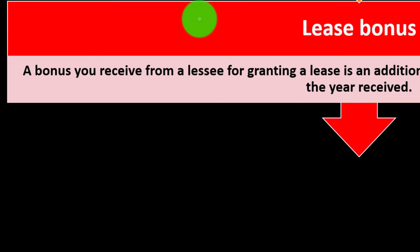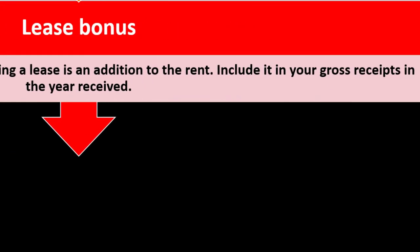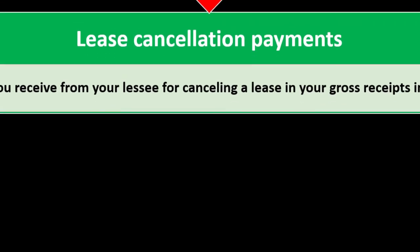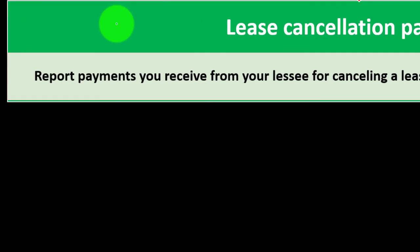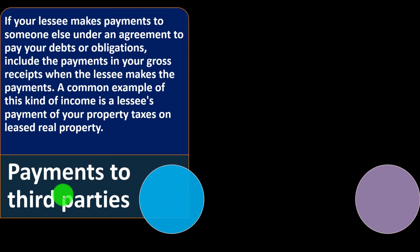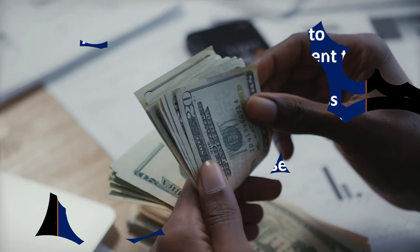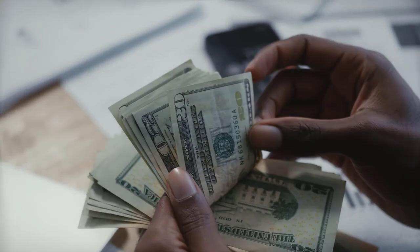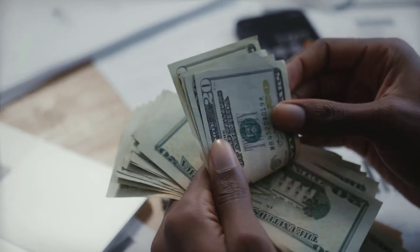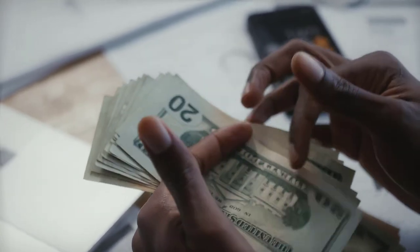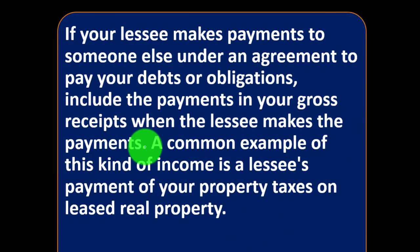On lease bonuses — a bonus you receive from a lessee for granting a lease is an addition to the rent; include it in your gross receipts in the year received. For lease cancellation payments — report payments you receive from your lessee for canceling a lease in your gross receipts in the year received. Regarding payments to third parties — if your lessee makes payments to someone else under an agreement to pay your debts or obligations, include the payment in your gross receipts when the lessee makes the payment. A common example is a lessee's payment of your property taxes on the leased real property.